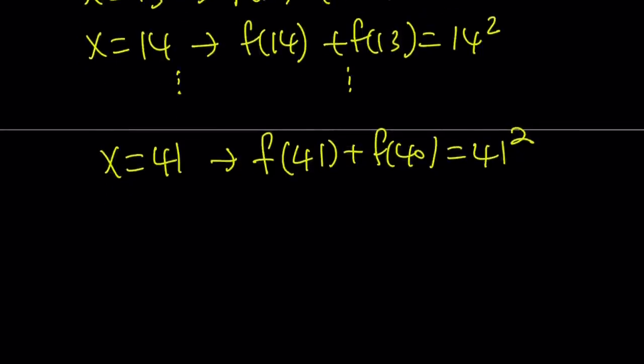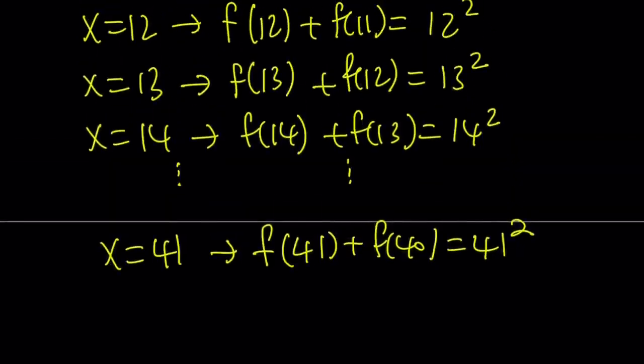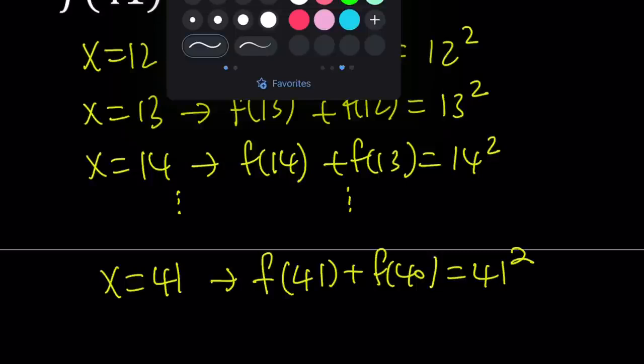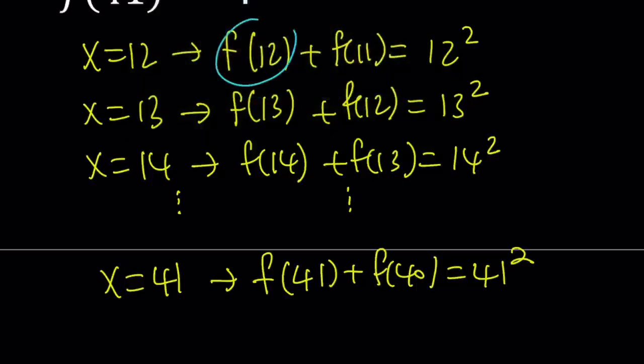Great. Now our goal is to find f(41) and we do know f(11), which both of them are part of these equations. But there's a lot of extra terms, such as this one. For example, I have f(12) here and here, and I need to get rid of them. So if I just add up these equations, it's not going to help me because they're not going to cancel out.